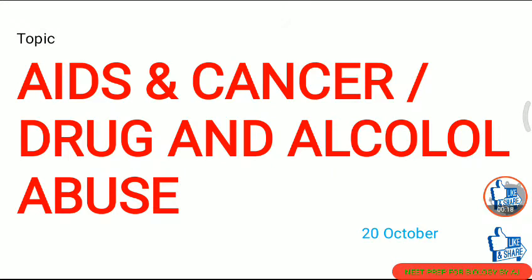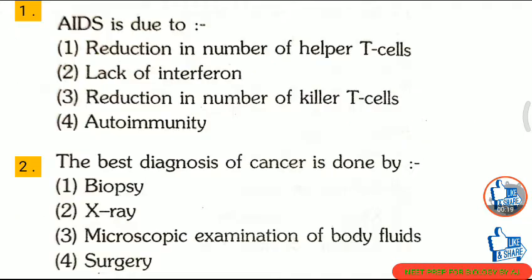Question 1: AIDS is due to — first, reduction in number of helper T cells; second, lack of interferon; third, reduction in number of killer T cells; fourth, autoimmunity. The correct answer is option 1: reduction in number of helper T cells.